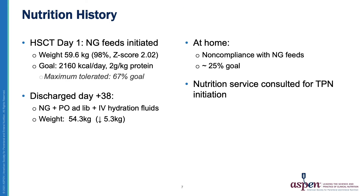Prior to transplant, the patient was adequately nourished, weighing 59.6 kilograms. The day prior to his transplant, he started nasogastric feeds in anticipation that he wouldn't be able to consume sufficient oral calories. Unfortunately, after the transplant, he was never able to tolerate his goal NG feeds due to abdominal discomfort, and he was discharged just over a month later on two-thirds goal NG feeds and IV hydration fluid. At that time, his weight was down 5.3 kilograms. At home, the patient was non-compliant with his NG feeds, often shutting them off due to feeling full. It was estimated he was getting only about 25% of total goal feeds daily.